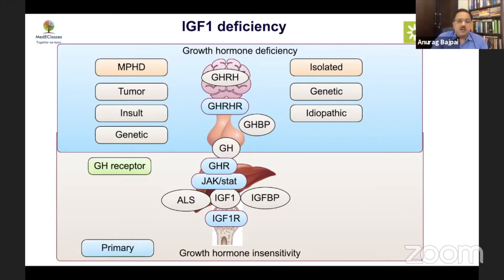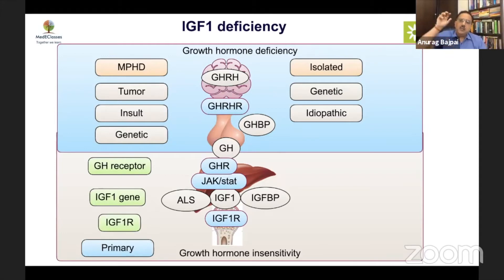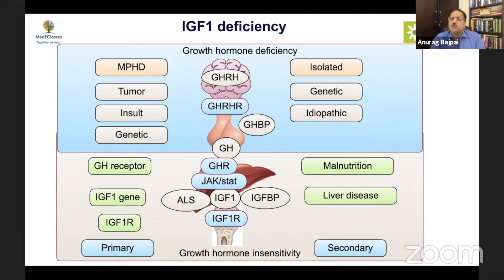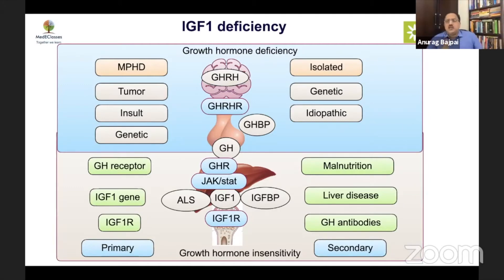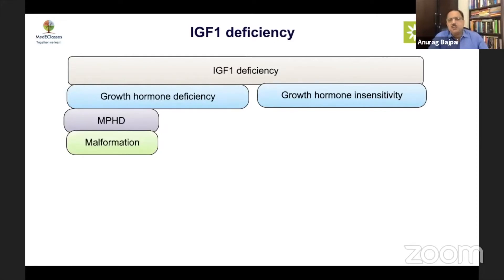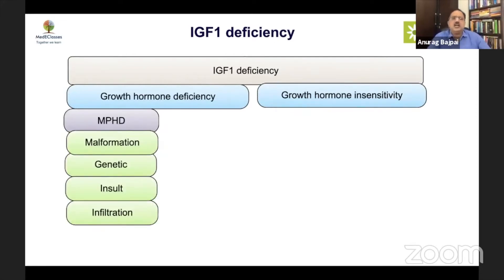We can also have a primary problem involving the growth hormone receptor, IGF-1 gene, or IGF-1 receptor — similar to primary versus secondary hypothyroidism, this is a primary IGF-1 deficiency. Secondary abnormalities include malnutrition and liver disease, which must always be excluded before diagnosing growth hormone resistance or insensitivity. Importantly, GHD type 1 — a GH1 gene defect — will cause patients to develop growth hormone antibodies with treatment, resulting in a picture similar to growth hormone insensitivity.